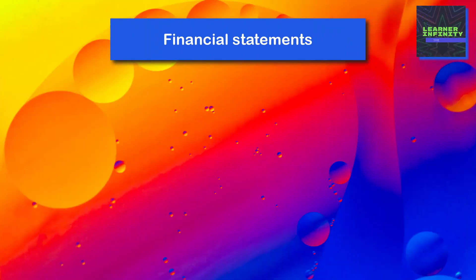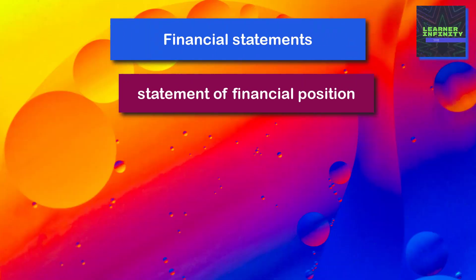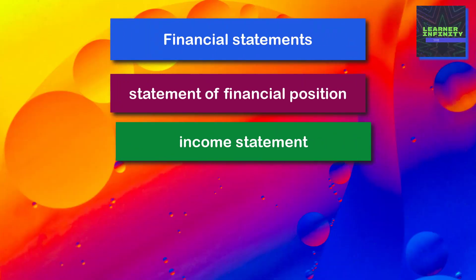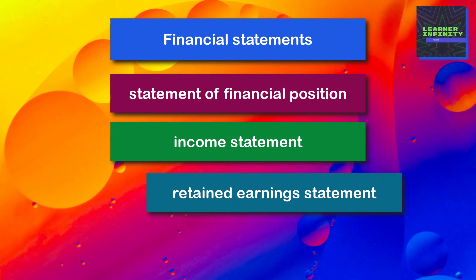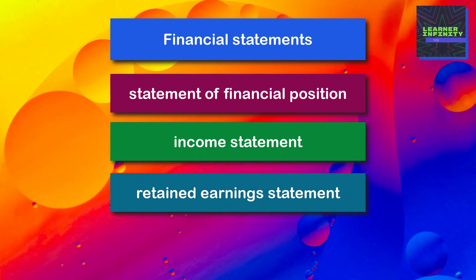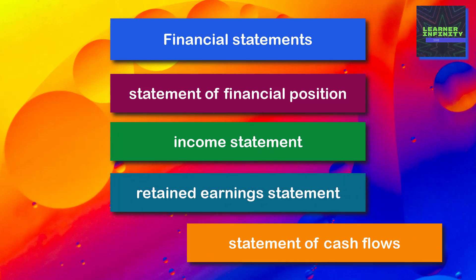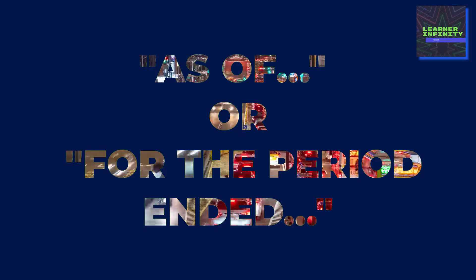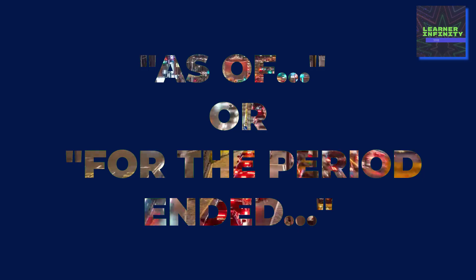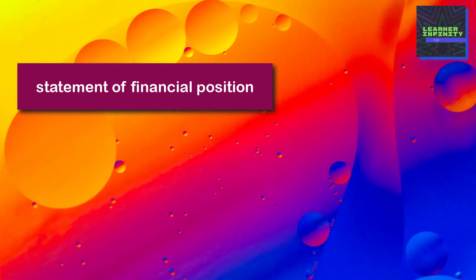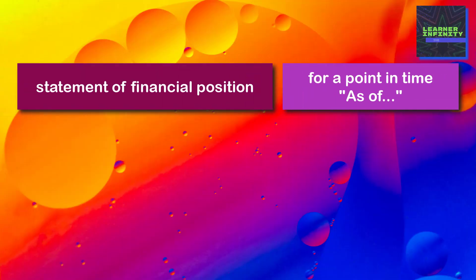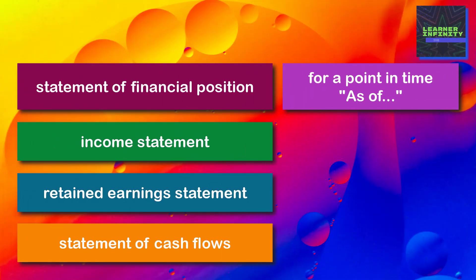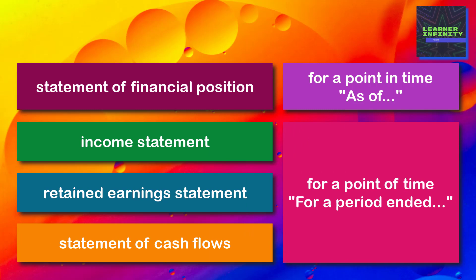The four financial statements are: Statement of Financial Position, Income Statement, Retained Earnings Statement, and Statement of Cash Flows. The first one is for a point in time, while the last three are for a period of time.